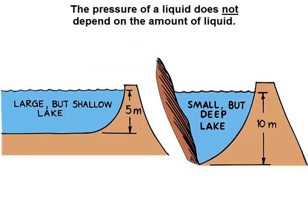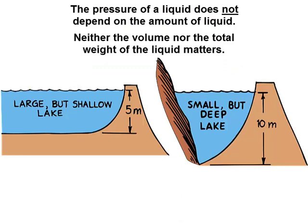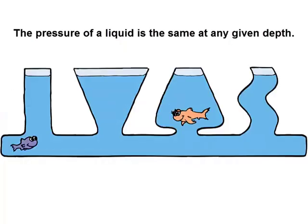The pressure of a liquid does not depend on the amount of liquid. Neither the volume nor even the total weight of liquid matters. The water pressure is greater at the bottom of the deeper lake. The dam holding back water twice as deep must withstand greater average water pressure, regardless of the total volume of water.